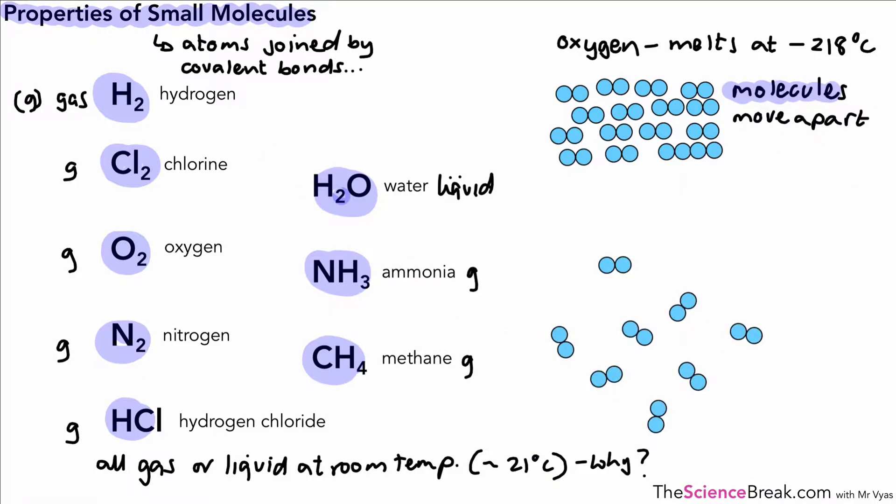Now if we raise this temperature even further it will change into a gas. Oxygen boils at around about minus 183 degrees. Remember minus 183 is a warmer temperature than minus 218. So that's when oxygen boils. Now why is that?